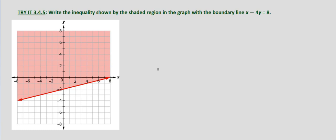We pick a point in the shaded region and determine which direction the inequality symbol should go. In this case, we're given this graph and the boundary line is x minus 4y equals 8.